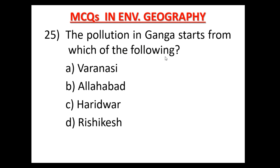Question number 25: The pollution of Ganga starts from which of the following — Varanasi, Allahabad, Haridwar, or Rishikesh? इन चारों शहरों में से किस से गंगा नदी का प्रदूषण प्रारंभ हो जाता है। Option D — Haridwar — is the correct answer.